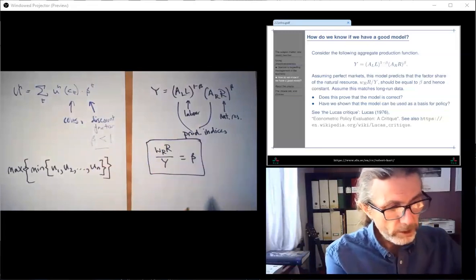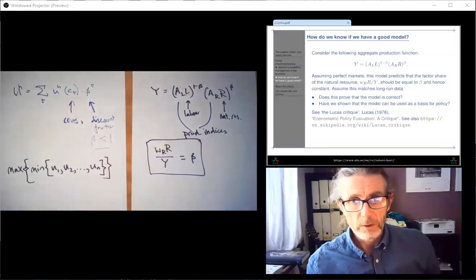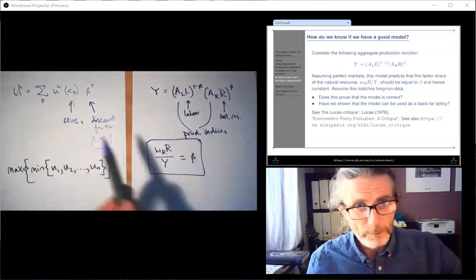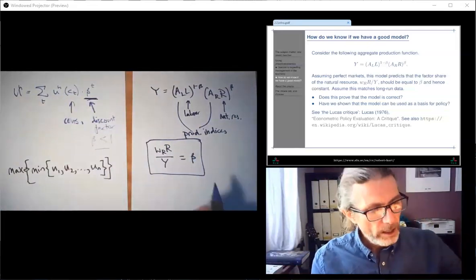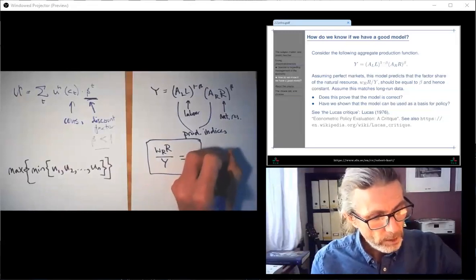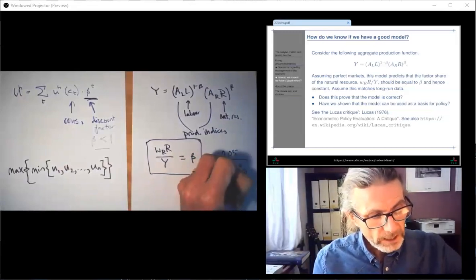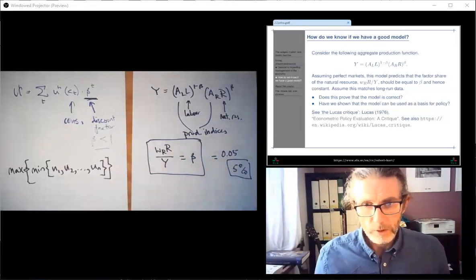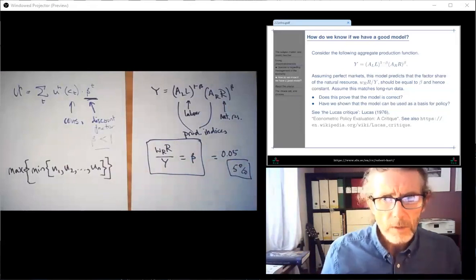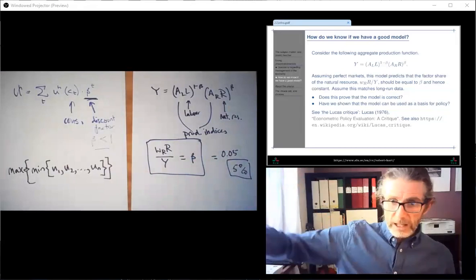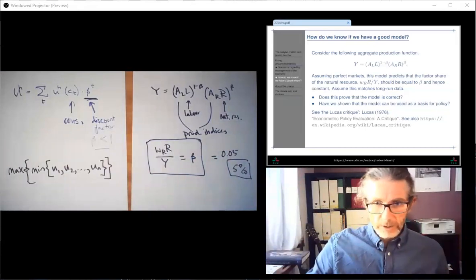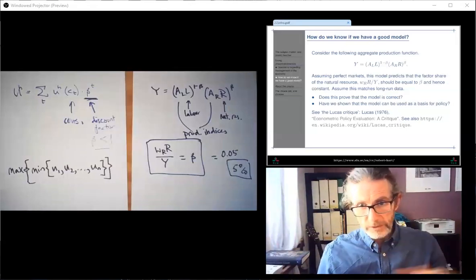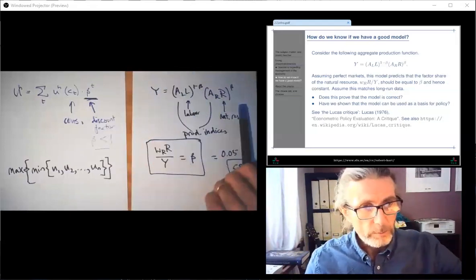And if we go through the math, assuming perfect markets, and so on, we should find this. The factor share of the resource is beta. And I say, assume this matches long-run data. And it does, more or less. Note, this is a different beta than that beta. This isn't a discount factor anymore. And it turns out that factor share is about 0.05%, or 5%. So we spend about 5%. Firms, on average, spend about 5% of their input costs on natural resources, which is mainly for energy. And that is quite constant. It fluctuates, but the trend is, there's hardly any trend, okay? In the very long run, it tends to be around 5%. Like, 100 years ago, it was around 5%. Today, it's around 5%. It's fluctuating in between, but there's no trend.